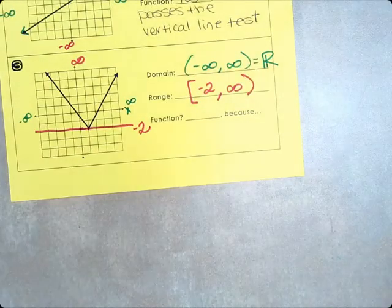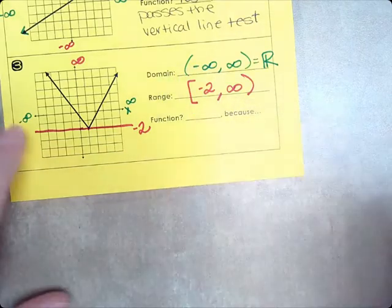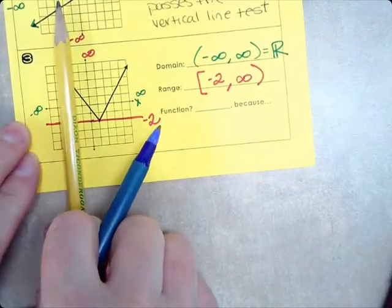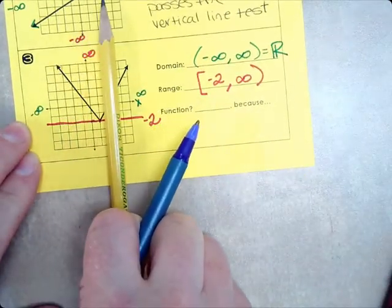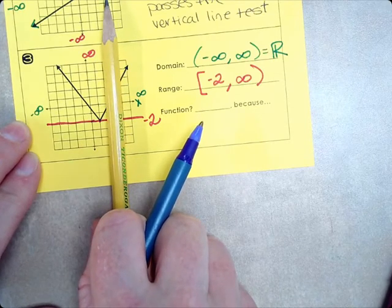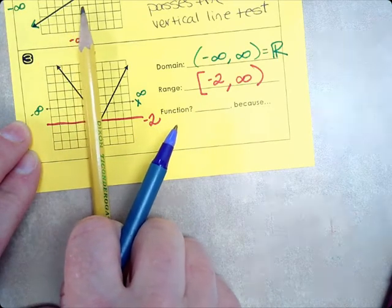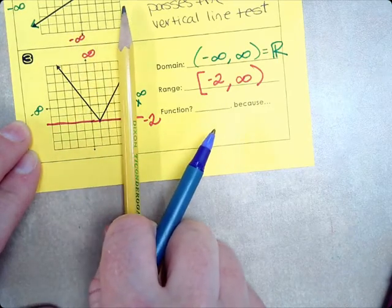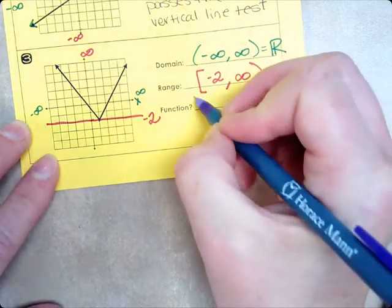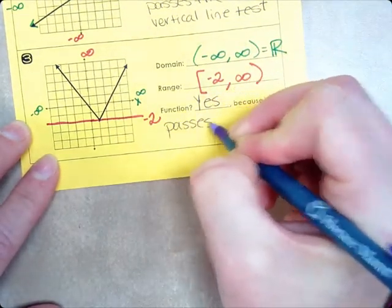Is it a function though? Yes. If I do my vertical line test, what do you see? There is a line. It only touches one time, right? All the way through as I slide my pencil down. It doesn't touch twice. So, yes. It passes the vertical line test.